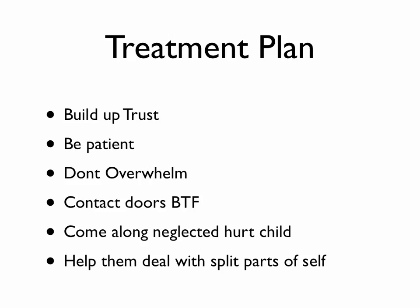The treatment plan, first of all, is to build up trust with this person. They have a really big 'don't trust' injunction because they've been let down so much in the past, and they don't trust anyone — let alone themselves. The work with the schizoid personality is very, very slow. You need to be very patient and you need to not overwhelm this type of person at all.